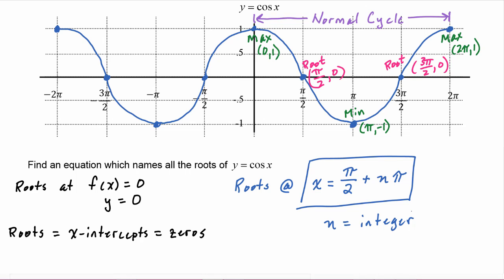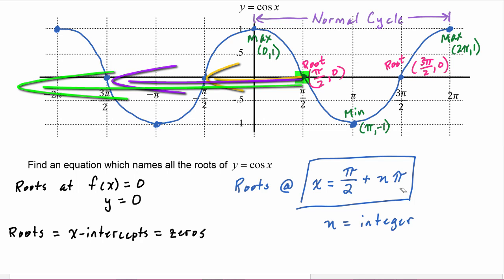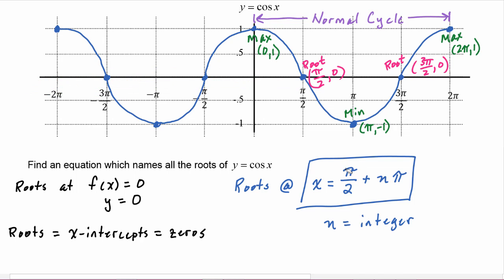Starting at pi over two, you go forward or backward depending on whether n is a positive or negative integer, by multiples of pi — adding one pi, two pi, three pi, four pi, or subtracting pi, two pi, three pi — and that gets you from your starting point of pi over two to all the infinitely many other roots on the graph of cosine of x.